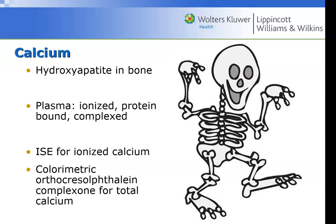The other place we can find calcium is in the extracellular areas. In plasma, about 50% is ionized, about 40% is bound to proteins like albumin — a major plasma protein — and the last 10% is complexed with other substances. The active calcium is ionized calcium. To determine how much ionized calcium is in a patient's bloodstream, you use an ion-selective electrode. For total calcium, you use the colorimetric method using the orthocresol phthalein complexone.